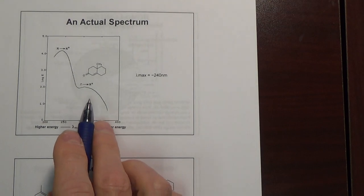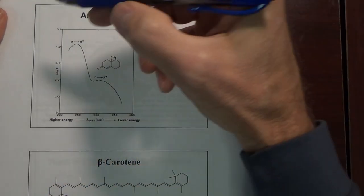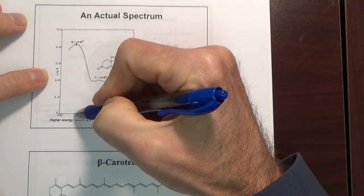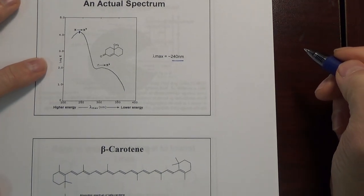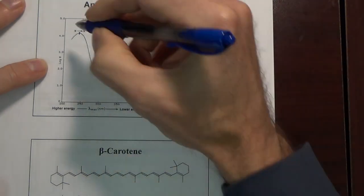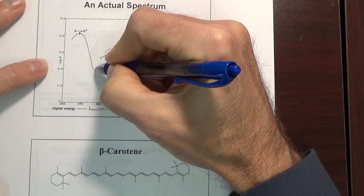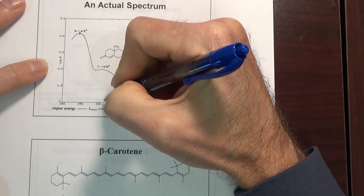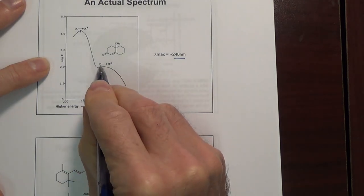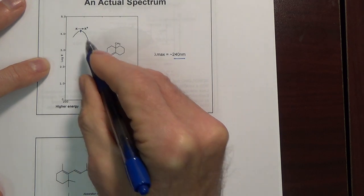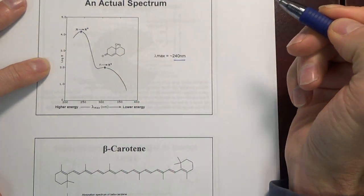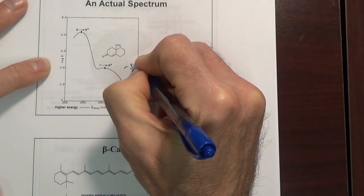Here's another UV-Vis spectrum of an organic molecule. We have a maximum absorbance here at about 240 nanometers, which is ascribed to a pi to pi star transition — it's more intense. Over here we have a second transition, as if something else is going on. This is ascribed to a non-bonding to pi star transition. It's not as intense as a pi to pi star, and it's at about 305 to 310 nanometers — that's your lambda max for this secondary absorption.